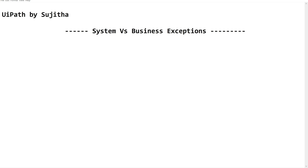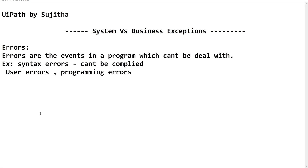Errors are events in a program which the program cannot deal with. For example, syntax errors — while compiling your automated program, if there are any syntax errors, it cannot compile or interpret into a system-understandable computer language. We are supposed to fix that issue and then recompile or republish it. So user errors and programming errors are all considered as bugs in your automated program. There is no handling mechanism to reroute this kind of error — the only way is to fix the bug and recompile.